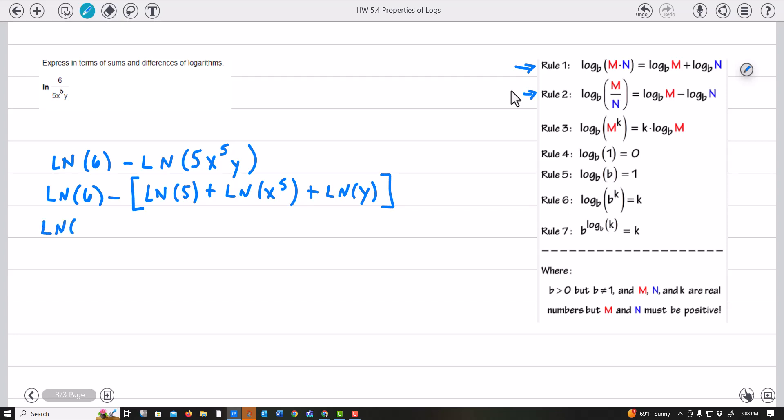And I have Ln of 6. I'm going to distribute this negative, so minus Ln of 5. I'm going to distribute the minus, and I'm also going to use the power rule here, so I'll bring the 5 down in front.